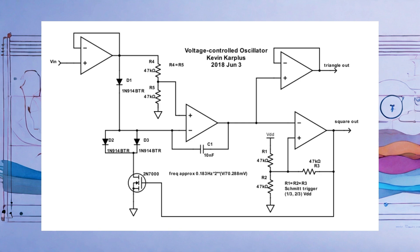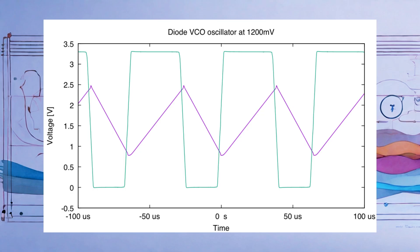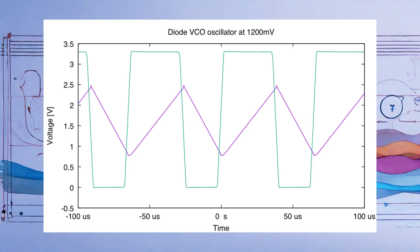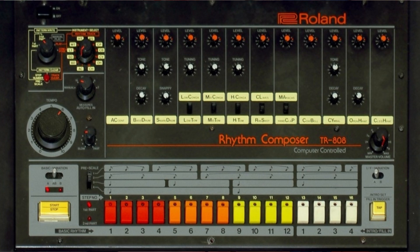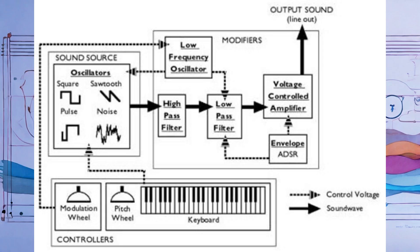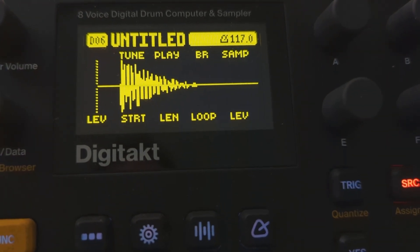Analog components like operational amplifiers, OP amps, and voltage controlled oscillators, VCOs, are also used in many drum machines, especially those with analog synthesis. These components generate and shape the drum sounds, giving them their unique character and timbre. For example, classic drum machines like the TR-808 use analog synthesis to create their iconic sounds, and modern machines might use a combination of analog and digital components for more versatility. Together, these elements form the brains of a drum machine, working to create the beats and rhythms that we like.